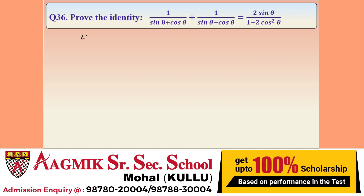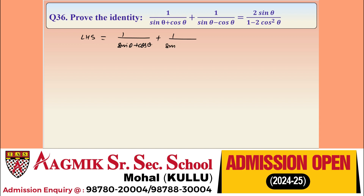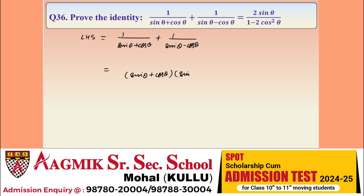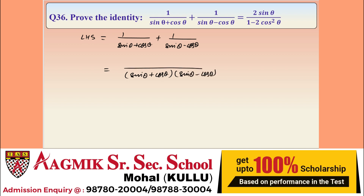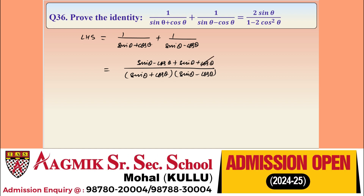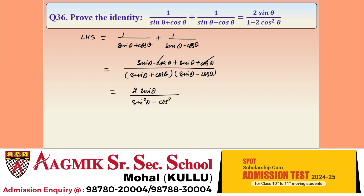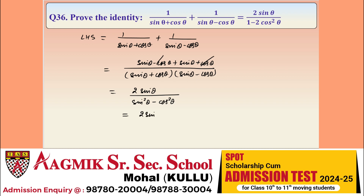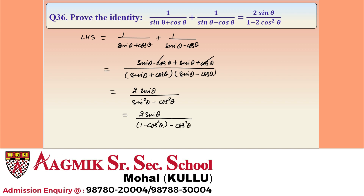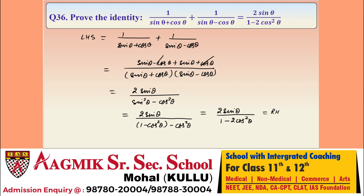Question 36: prove the identity 1/(sin θ + cos θ) + 1/(sin θ - cos θ) = 2 sin θ/(1 - 2cos²θ). Taking LCM: numerator = (sin θ - cos θ) + (sin θ + cos θ) = 2 sin θ. Denominator = (sin θ + cos θ)(sin θ - cos θ) = sin²θ - cos²θ. Replacing sin²θ with 1 - cos²θ: denominator = 1 - cos²θ - cos²θ = 1 - 2cos²θ. So LHS = 2 sin θ/(1 - 2cos²θ) = RHS.